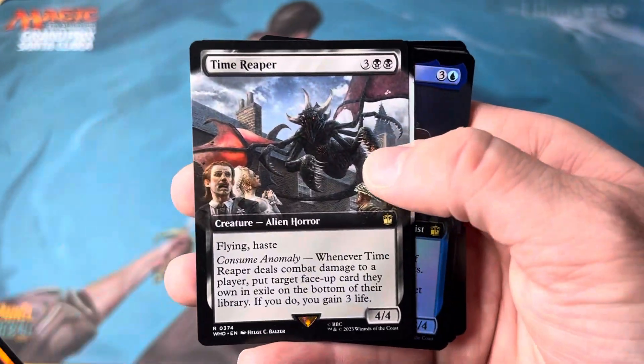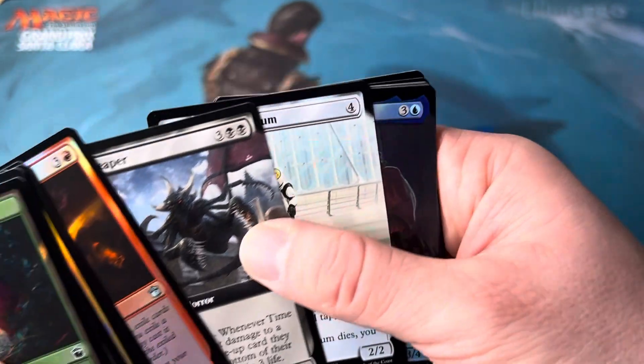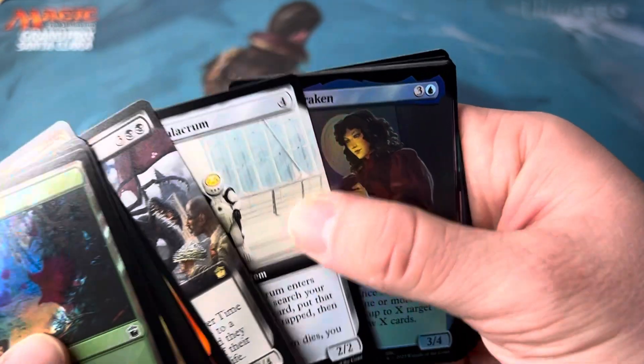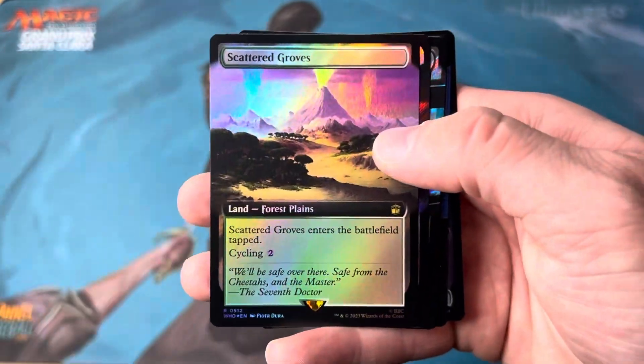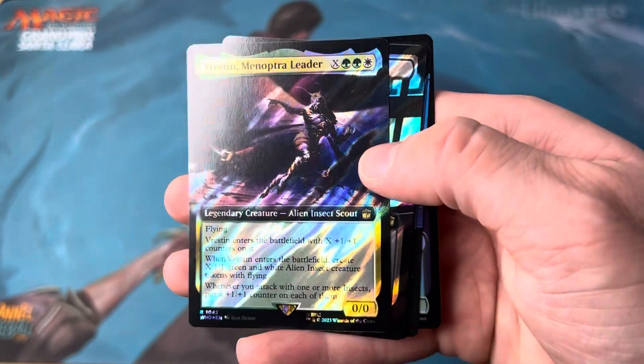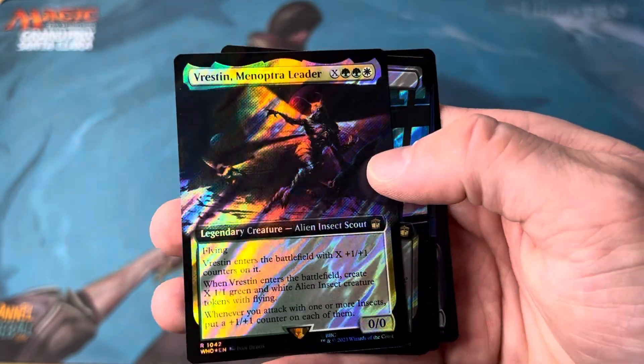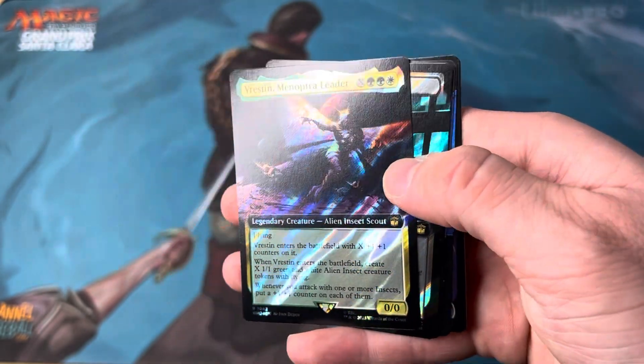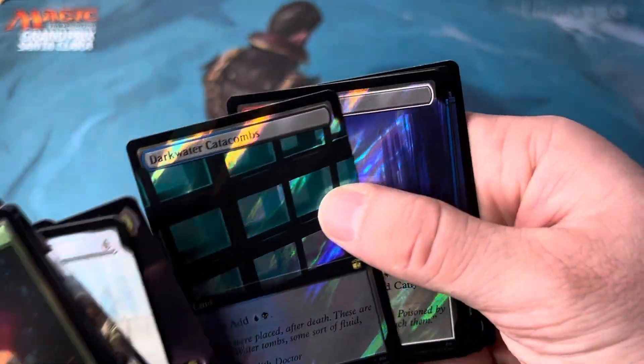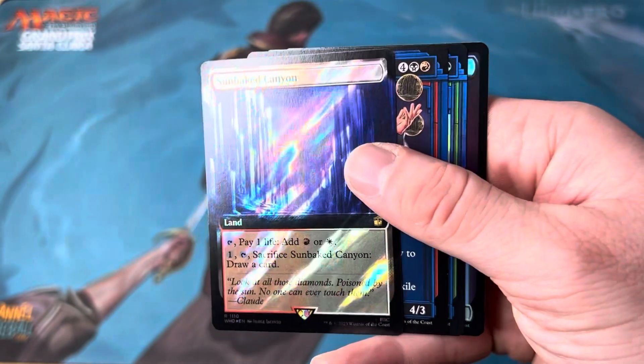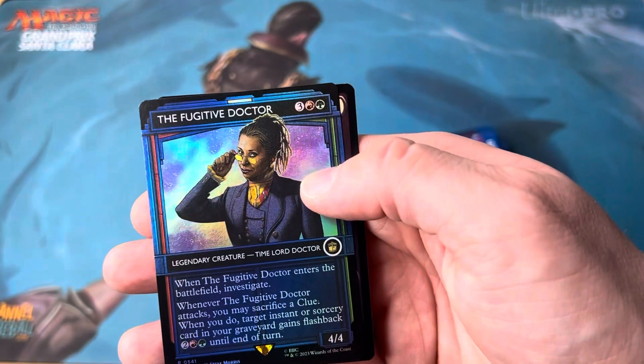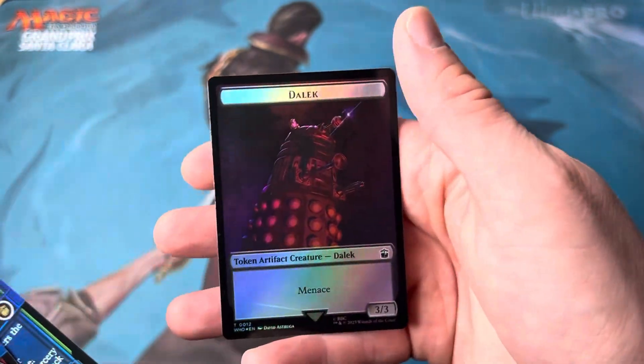Throws of chaos. Time reaper. Terrifying looking. Solemn simulacrum. Oh he just looks like he needs a friend. Scattered groves. Fantastic. Oh my gosh. That is a very terrifying looking insect. I apologize it kind of gets a little washed out by the color of my lights. But absolutely beautiful sunbaked canyon. Again a beautiful card. The master multiplied. The fugitive doctor. A Dalek.